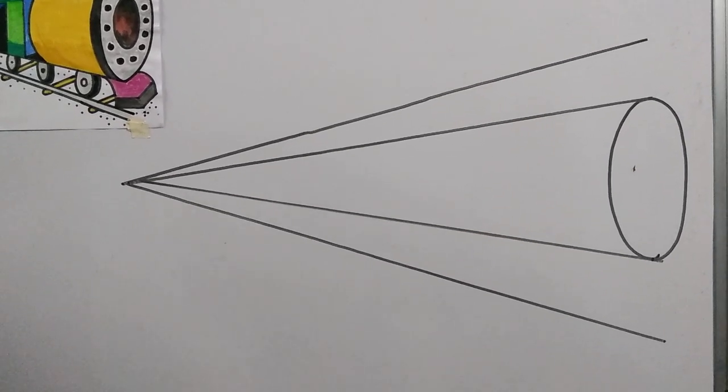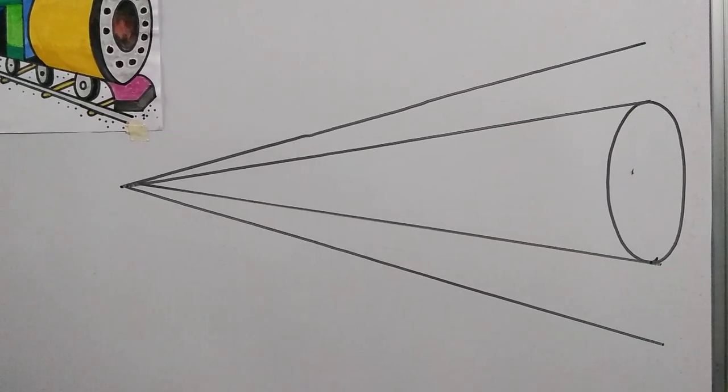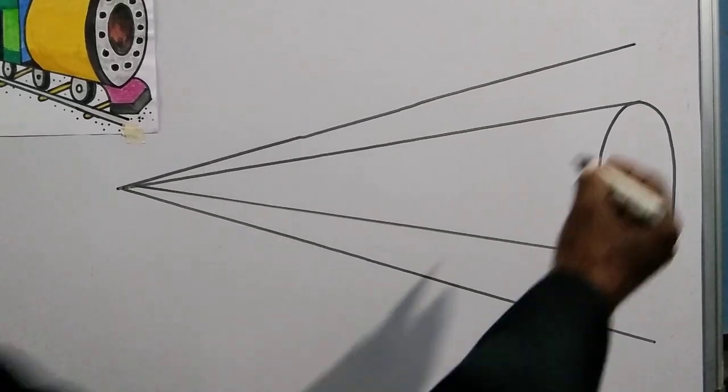Step No. 4. Draw one more semi-circle near the oval as shown.